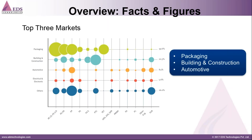Looking at facts and figures in graph form, the biggest market for plastics is the packaging industry. Surprisingly, the second biggest is building and construction, which extensively uses materials like PVC or polyvinyl chloride in piping. The third biggest industry is automotive, which is also not surprising. The graph shows different types of plastics on the x-axis being used across these different industries.